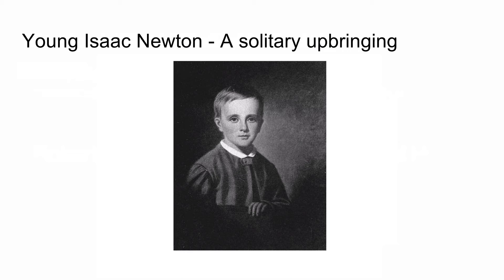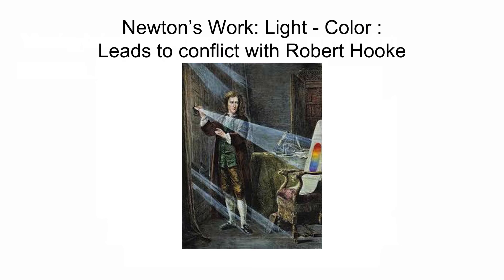The chapter then goes on to talk about a young Isaac Newton and what his solitary upbringing was like, and how that solitary upbringing really molded him as a person who was isolated from a lot of his peers. He was very jealous of the work that he did and was not willing to share it a whole lot. Newton's groundwork on things like light and color led to conflict with Robert Hooke, because Newton was not a person to spread a lot of the credit around — he wanted sole credit for his work.